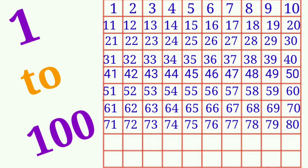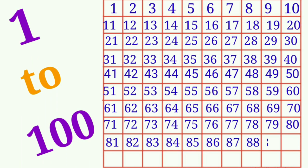And the next row children: 81, 82, 83, 84, 85, 86, 87, 88, 89, 90.